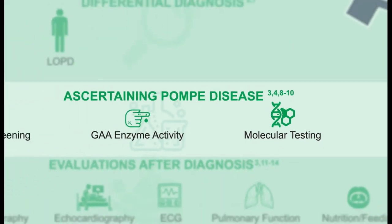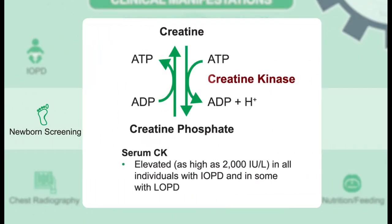Some supportive laboratory findings of Pompe disease can include an elevation in serum CK. It is important to note, however, that while high levels of CK can be seen in patients with infantile-onset Pompe disease, this is a variable finding for late-onset Pompe disease — in fact, serum CK might be normal or only very mildly elevated in some late-onset patients.